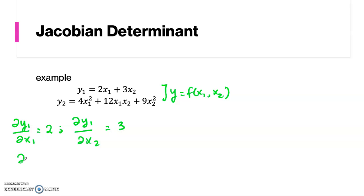And we find ∂y2 over ∂x1 equals to 8x1 plus 12x2, and ∂y2 over ∂x2 is just 12x1 plus 18x2.